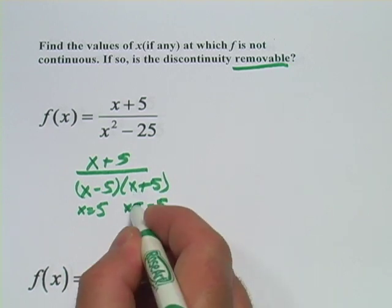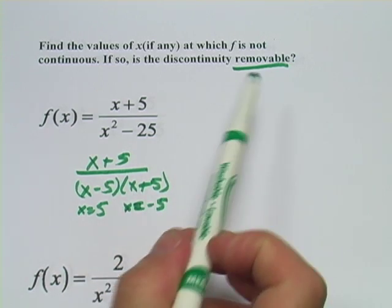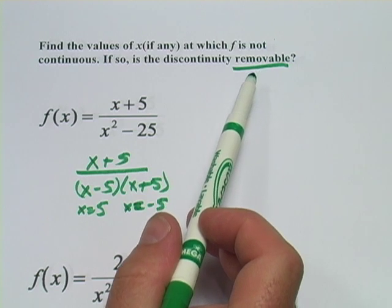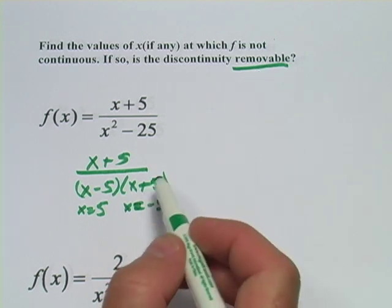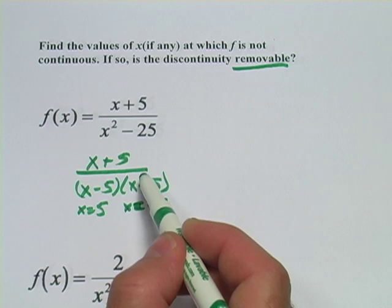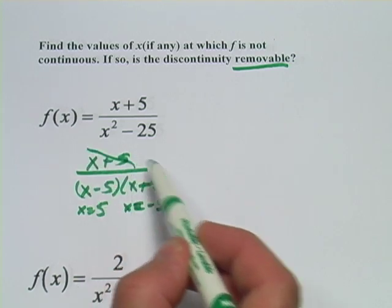And you've got to be careful about your signs here, because the other part of this question is, which discontinuities are removable? And the ones that are removable are the ones that you can cancel out. So we can cancel that out.